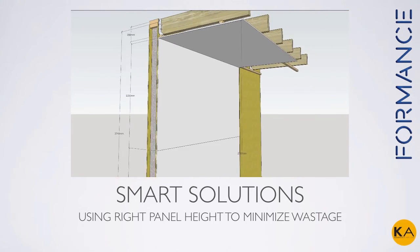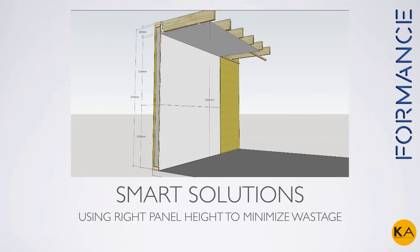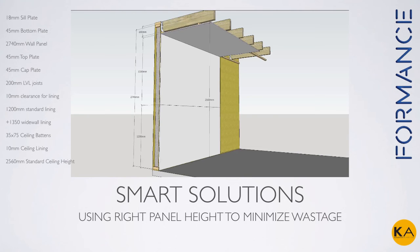And we can achieve standard internal ceiling height to align nicely with conventional internal walls. So let's look at it again: we start with an 18mm seal plate, a 45mm bottom plate inside the 2740mm Fullman's panel, a 45mm top plate and a 45mm cap plate, 200mm LVL joists, 10mm clearance for internal lining at the bottom, then using standard 1200mm wide by 1350mm lining for the walls, ceiling battens and ceiling lining — and we achieve a 2560mm standard ceiling height. There's obviously a variety of options here; this is just one example of how smart these solutions can be.